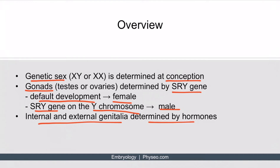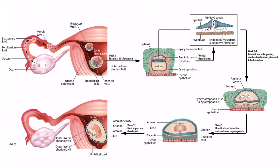Let's look at some images to see how exactly this happens. This is an excellent overview image introduced in our video on early fetal development. As a brief review, recall that after fertilization, the blastocyst implants on the uterine wall. Around week two, a bilaminar disc is formed, which includes the epiblast and hypoblast. At week three, gastrulation occurs, and we end up with the formation of the endoderm, mesoderm, and ectoderm, and these three layers are inside of the amniotic cavity.